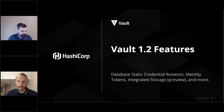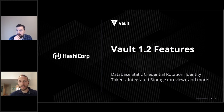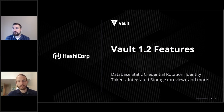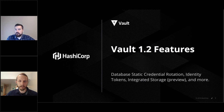Today our webinar is being hosted by Vault technical marketer Justin Weizig, who's going to give us a tour of Vault 1.2. Vault 1.2 is the latest release of HashiCorp Vault with new features such as database static credential rotation, a new way to authenticate and mint OIDC tokens, and a tech preview of integrated Vault native storage. For Vault Enterprise, we also added a new KMIP server secret engine. Today Justin is going to demo database static credential rotation and the preview of integrated Vault native storage.